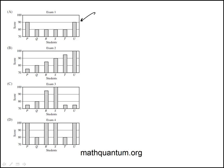So here we're shown the scores of six students P, Q, R, S, T, and U in four exams, which are these choices A, B, C, D.